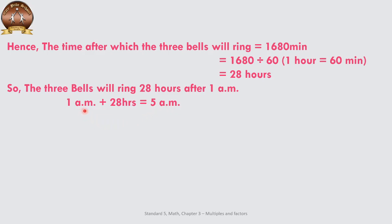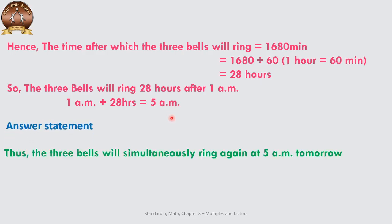How do we get 5 AM? Adding 24 hours to 1 AM brings us back to 1 AM the next day, with 4 hours remaining. So 1 AM plus 4 more hours gives us 5 AM of the next day. Therefore, the three bells will ring simultaneously again at 5 AM tomorrow.